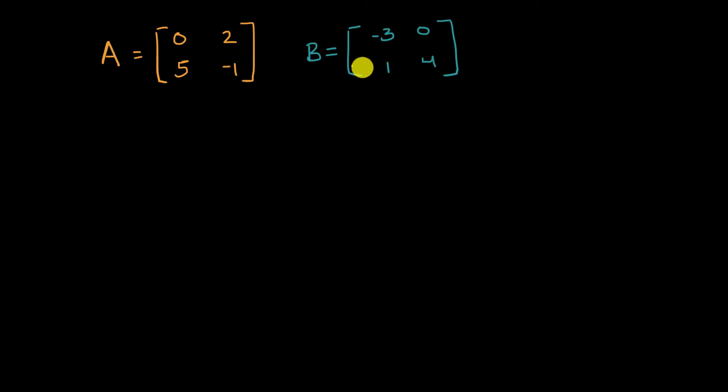So what I have here is two different transformation matrices. And what we're going to think about in this video is can we construct a new matrix that's based on the composition of these transformations? Or a simpler way of saying that, a new transformation that's based on applying one of these transformations first, and then the other one right after that.